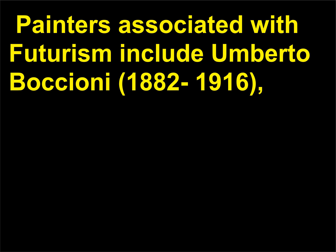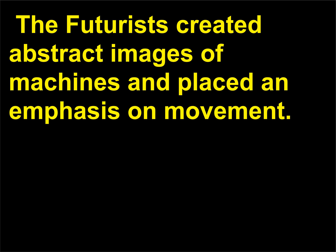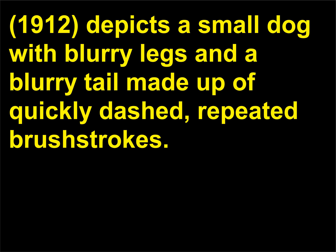Painters associated with Futurism include Umberto Boccioni (1882–1916), Gino Severini (1883–1966), and Carlo Carrà (1881–1916). The Futurists created abstract images of machines and placed an emphasis on movement. Giacomo Balla's Dynamism of a Dog on a Leash (1912) depicts a small dog with blurry legs and a blurry tail made up of quickly dashed, repeated brush strokes.